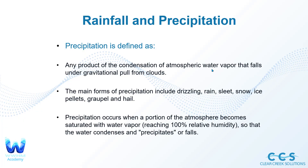Let's talk about rainfall and precipitation. Precipitation is defined as any product of the condensation of atmospheric water vapor that falls under gravitational pull from clouds. The main forms of precipitation include drizzle, rain, sleet, snow, ice pellets, graupel, and hail. Precipitation occurs when a portion of the atmosphere becomes saturated with water vapor, reaching 100% relative humidity so that the water condenses and precipitates or falls.